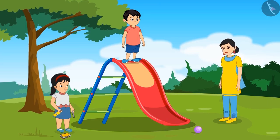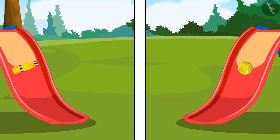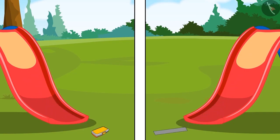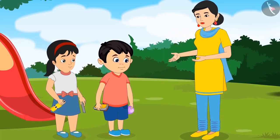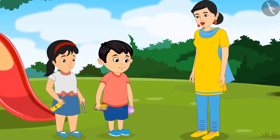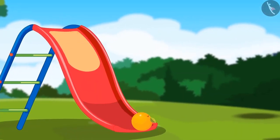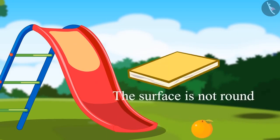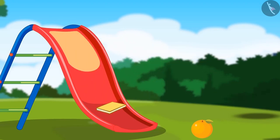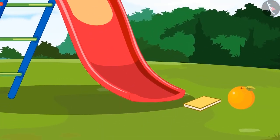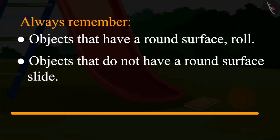Rightly said, Chotu. So Mummy, this means that all round objects roll and the rest of the objects slide down — is it so? Yes, Chotu. The objects that have a round surface, they roll — just like this orange, it is round so it will roll. And if the surface is not round, like this notebook, then it will slide. Objects whose surface is round, they roll, and objects whose surface is not round, they slide down.